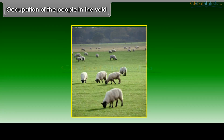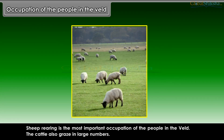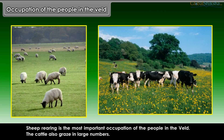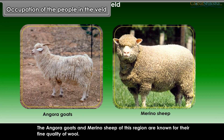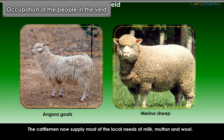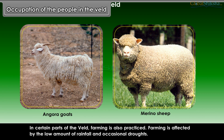Sheep rearing is the most important occupation of the people in the Veld. The cattle also graze in large numbers. The Angora goats and Merino sheep of this region are known for their fine quality of wool. The cattlemen supply most of the local needs of milk, mutton, and wool. In certain parts of the Veld, farming is also practiced, though it is affected by low rainfall and occasional droughts.